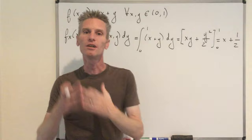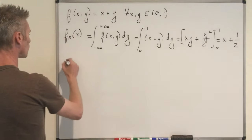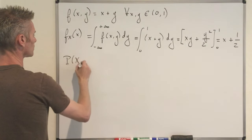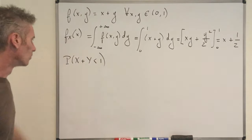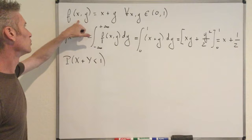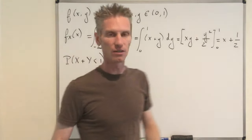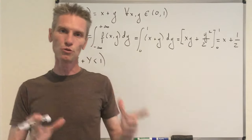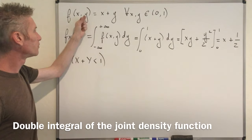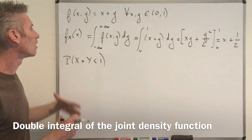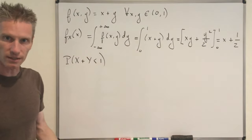Now the last question: we want to find the probability that X + Y is less than 1. By definition of the joint density function, the probability of this type of event involving two random variables is the double integral of the joint density function over the domain where x + y < 1.